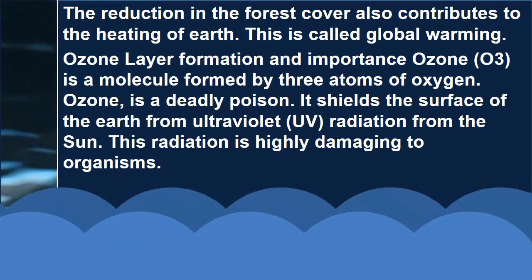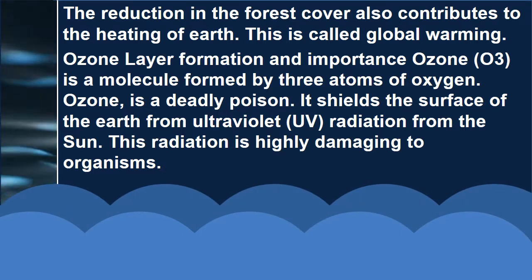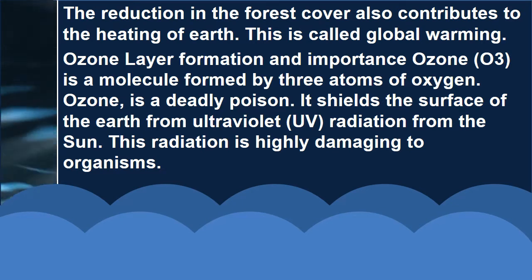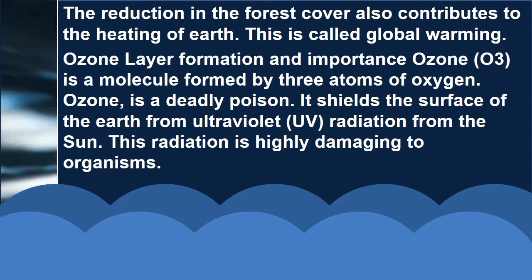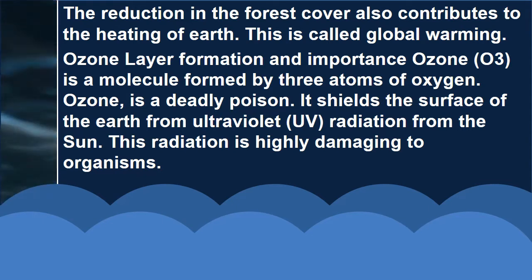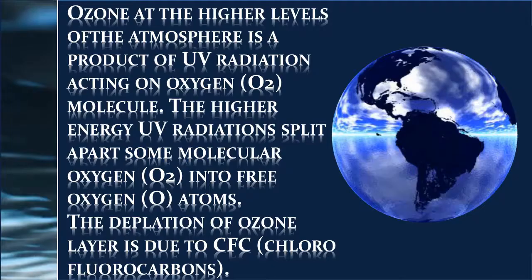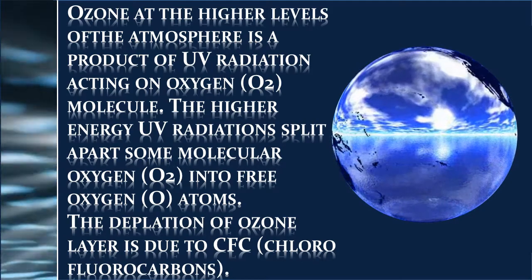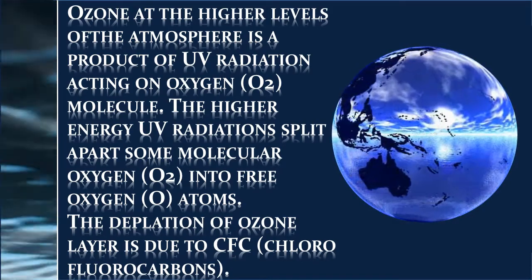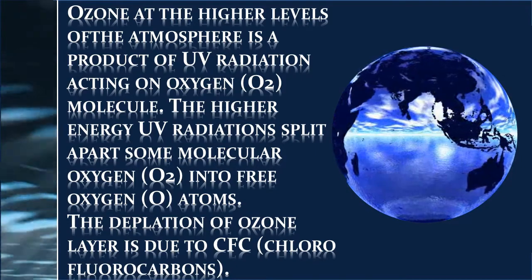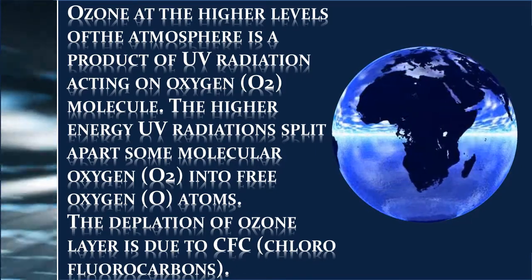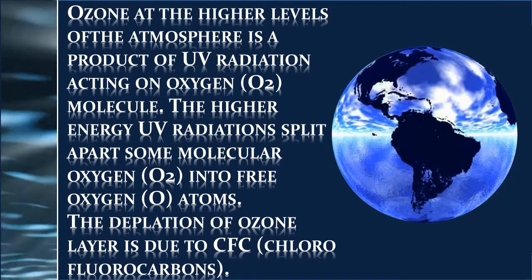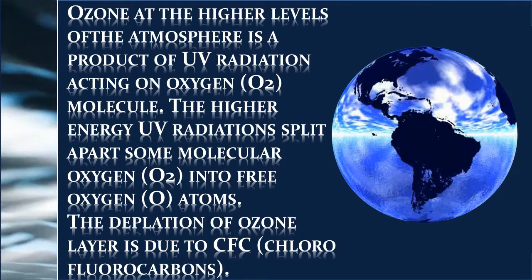Ozone Layer Formation and Importance: Ozone (O3) is a molecule formed by three atoms of oxygen. Ozone is a deadly poison, but it shields the surface of the earth from ultraviolet radiation from the sun. This radiation is highly damaging to organisms. Ozone at the higher levels of the atmosphere is a product of UV radiation acting on oxygen (O2) molecules. The higher energy UV radiation splits apart some molecular oxygen (O2) into free oxygen (O) atoms. The depletion of the ozone layer is due to CFC, chlorofluorocarbon.